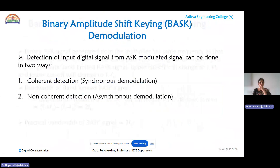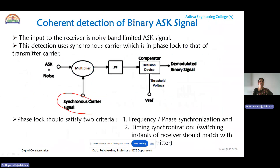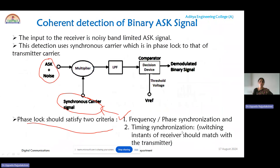Two types of detection techniques exist for binary ASK demodulation: coherent and non-coherent. In coherent detection, we use a synchronous carrier as the second input to the multiplier. In the receiver, the ASK signal is multiplied with the carrier to produce a signal that is then reconstructed using a low-pass filter. For coherent or synchronous detection, two criteria must be satisfied: frequency and phase synchronization — provided by the synchronous carrier — and timing synchronization, provided by the switching instance of the receiver.